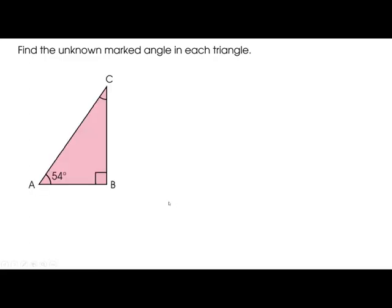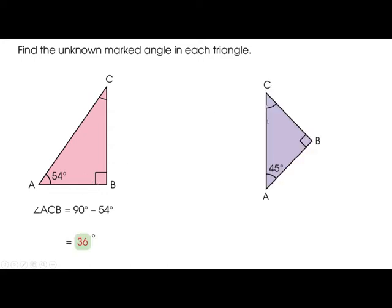Find the unknown marked angle in each triangle. Here they are not writing any degree value, but there is a small square symbol. This means it is making a 90-degree angle. We have 90 degrees and an unknown, so simply subtract to get the answer. Similarly, in this one, the square again confirms 90 degrees. Subtract 90 minus 45 and you will get the answer: 45 degrees.